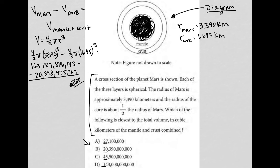But let's just see. So, if I have 163,187,806,143 minus 20,398,475,767, I am getting 142,789,330 and some more numbers. And it's obvious from that that our answer is this 143 billion kilometers cubed. So, answer choice D is the correct answer.